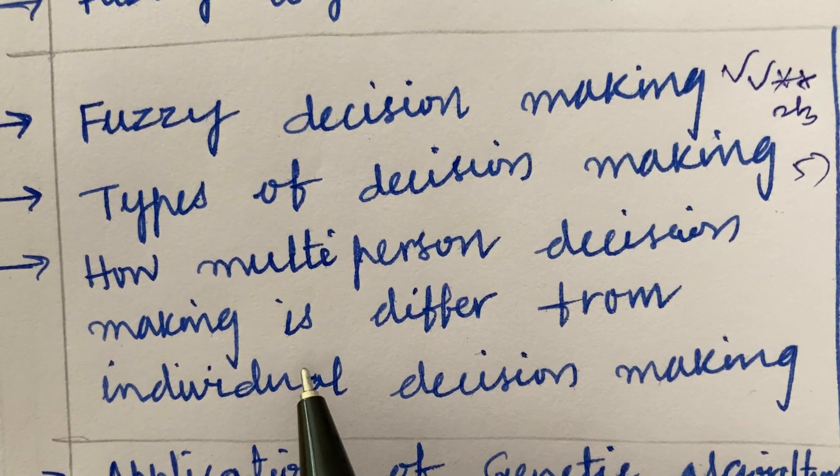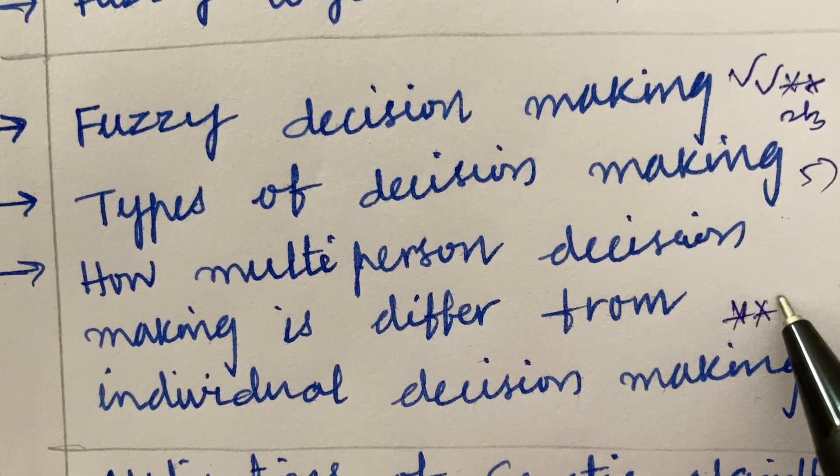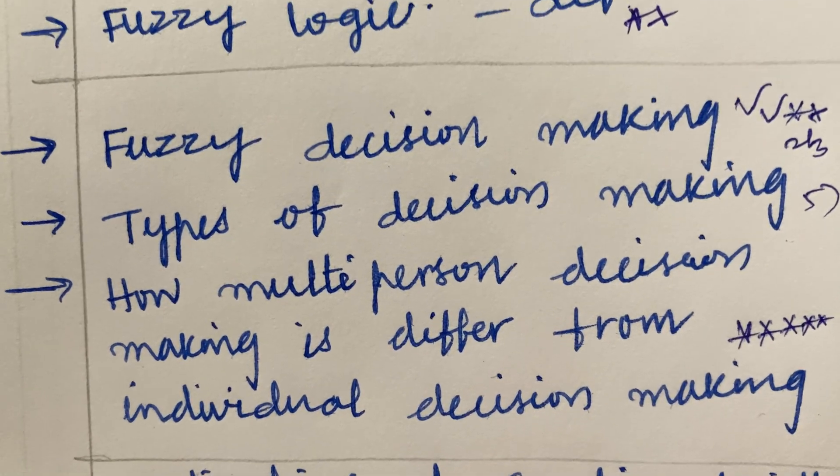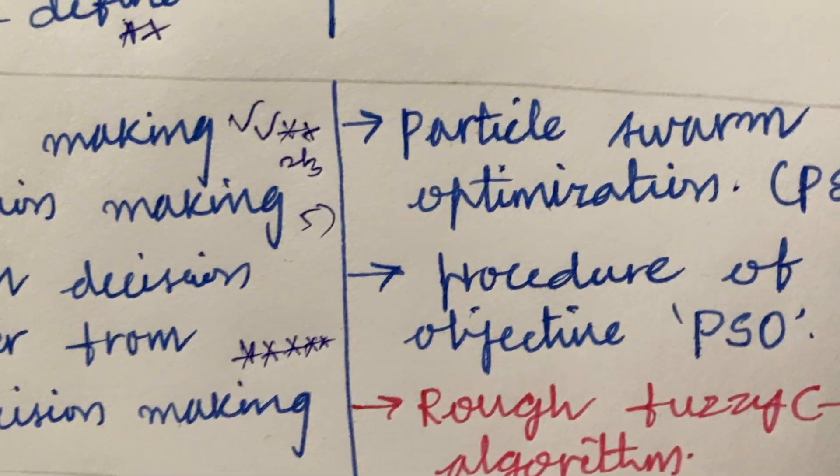How multi-person decision making is different from the individual decision making may also be said to be a topmost question. Do not neglect the course. It is scoring and you are supposed to write in point wise and do not write in paragraph.